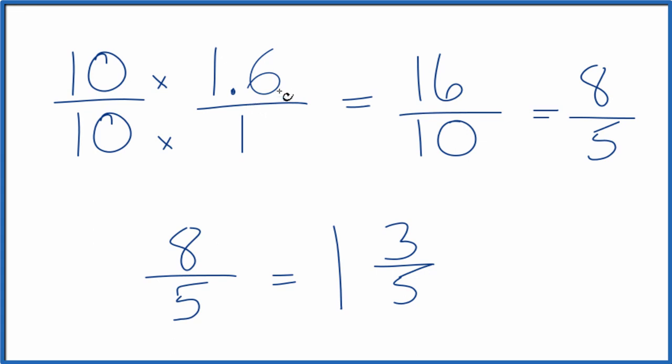So 1.6, the decimal, equals the improper fraction 16 tenths or 8 fifths, and the mixed number 1 and 3 fifths. And all of these have the same value; they're just represented differently.